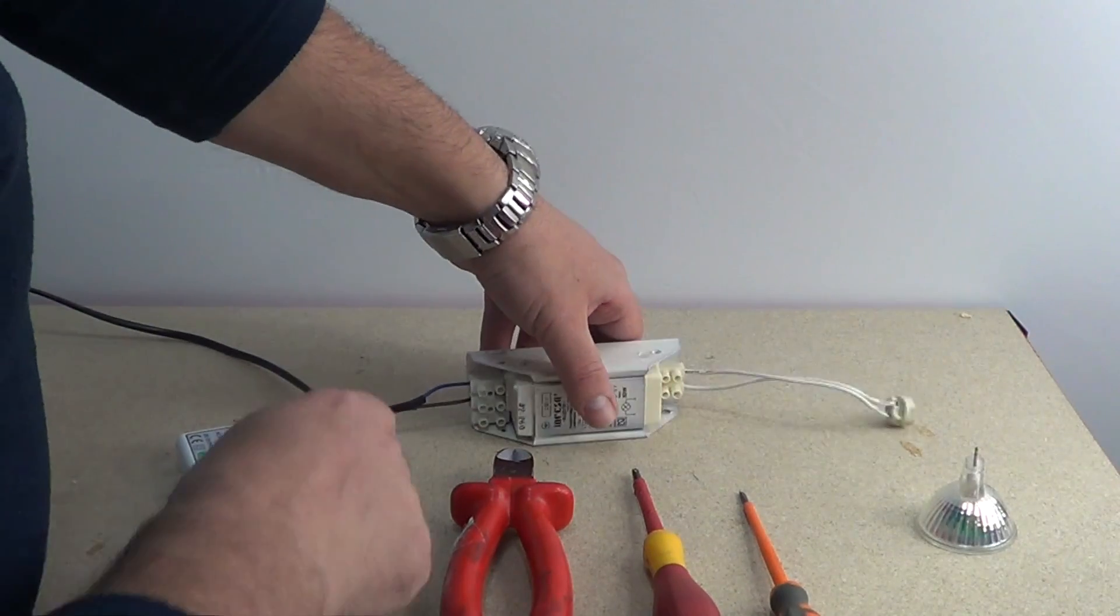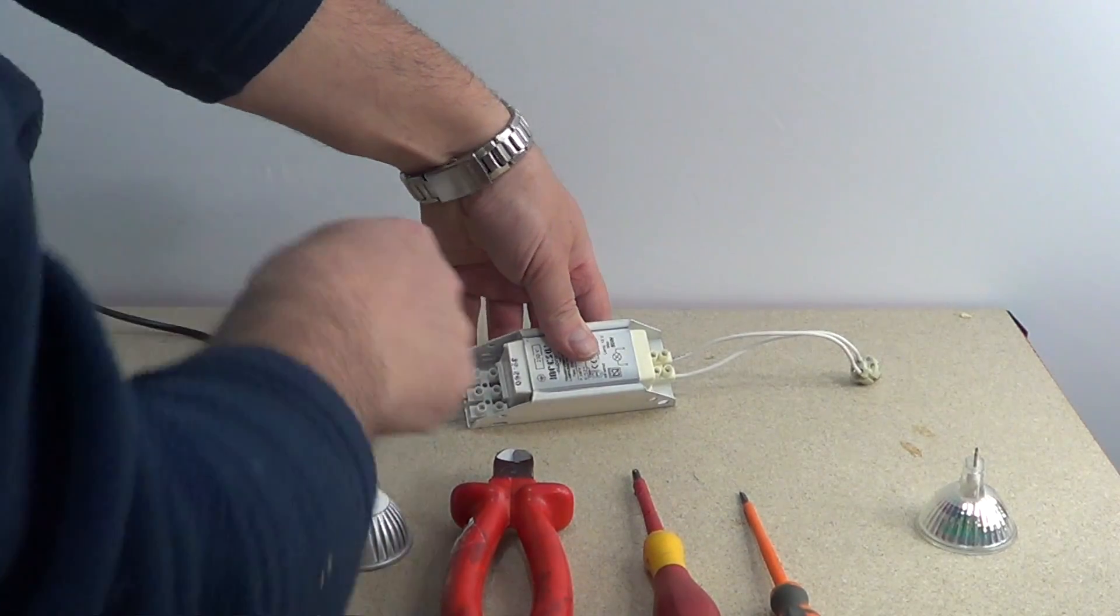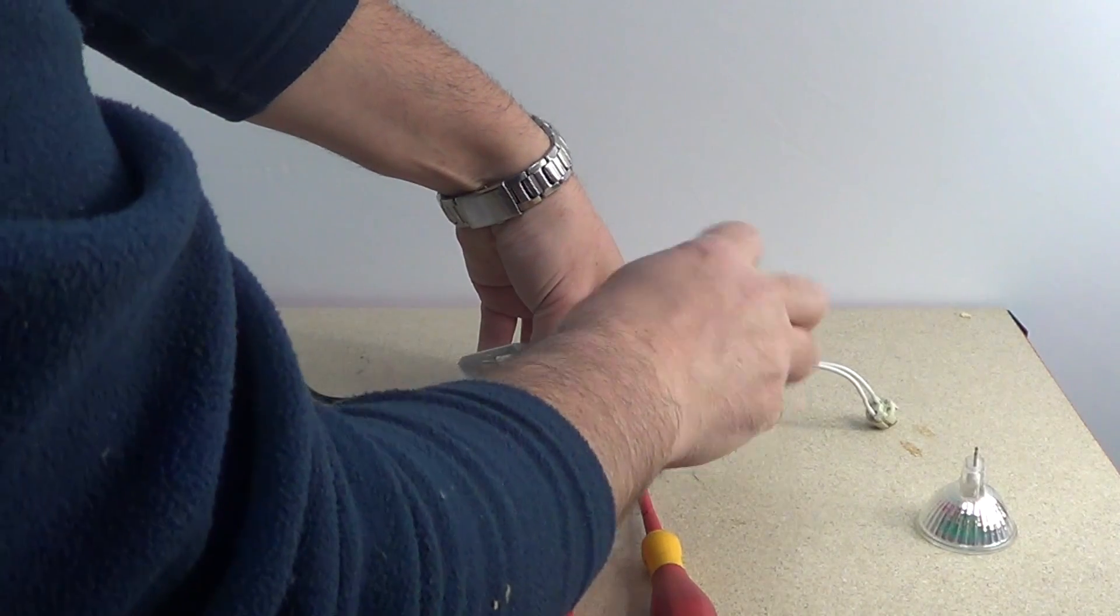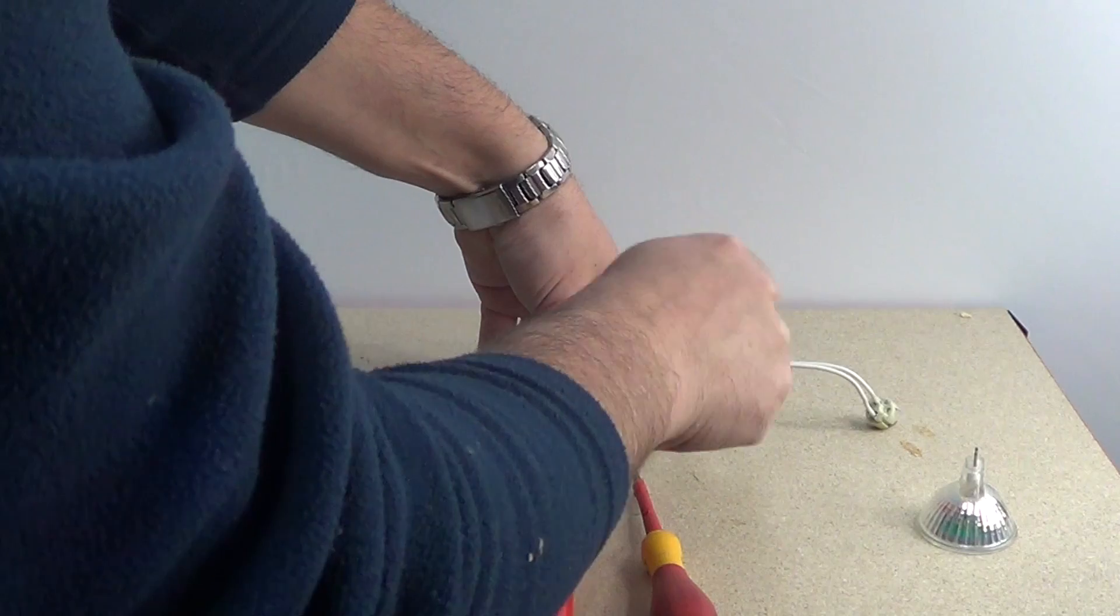Let it cool, disconnect the bulb and here you have the transformer. On this side you have the live wires and on this side you have the cable that connects to the bulb. Let's disconnect the cable from the bulb.